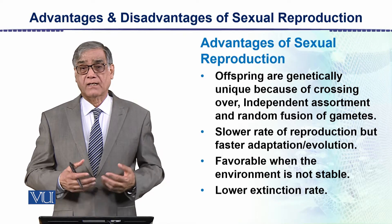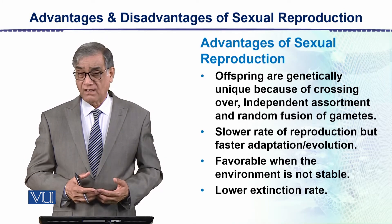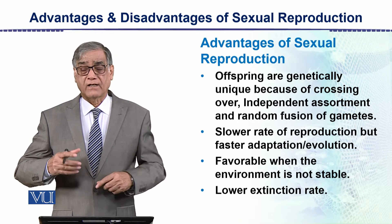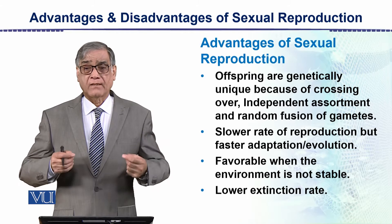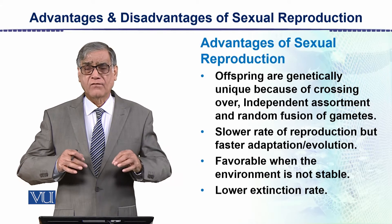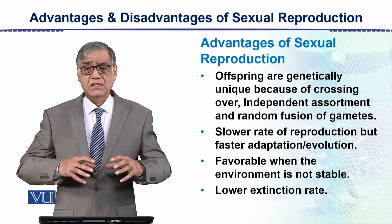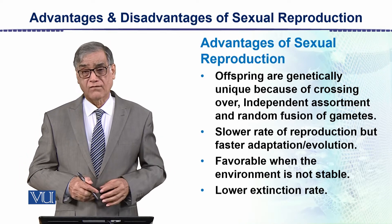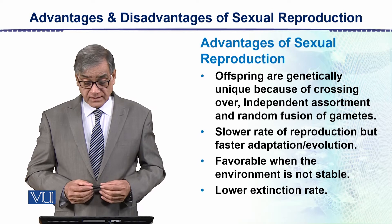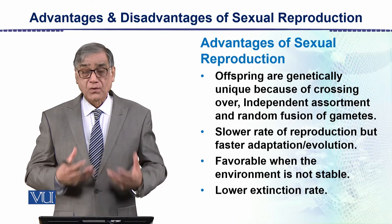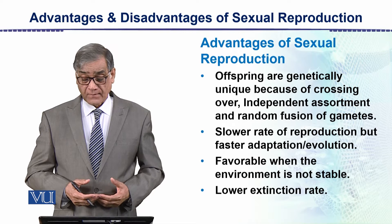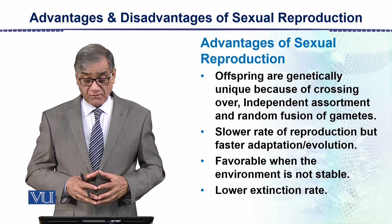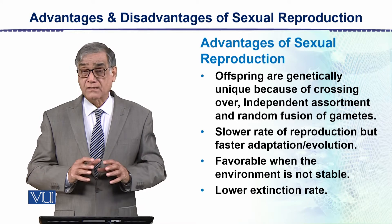This is the basis of the evolutionary process. If this variability does not happen, then these adaptations cannot happen — organisms cannot survive in the changing environment. There is a slower rate of reproduction, but faster adaptation and then evolution. This is favorable when the environment is not stable.